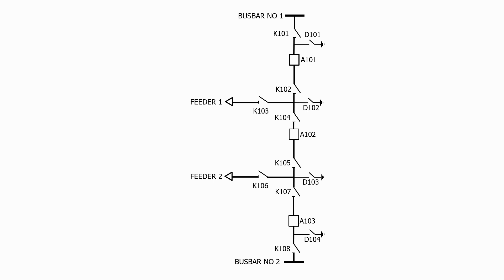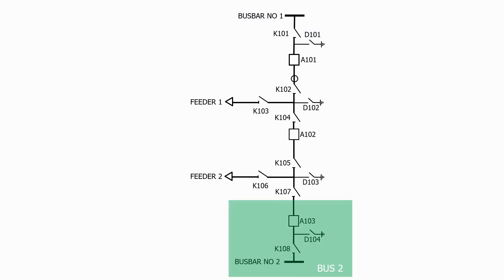Let's start with the busbars. We need a protection zone for busbar number 1, so let's place a current transformer for that zone in this location. We need a protection zone for busbar number 2, so let's place a current transformer for that zone in this location.